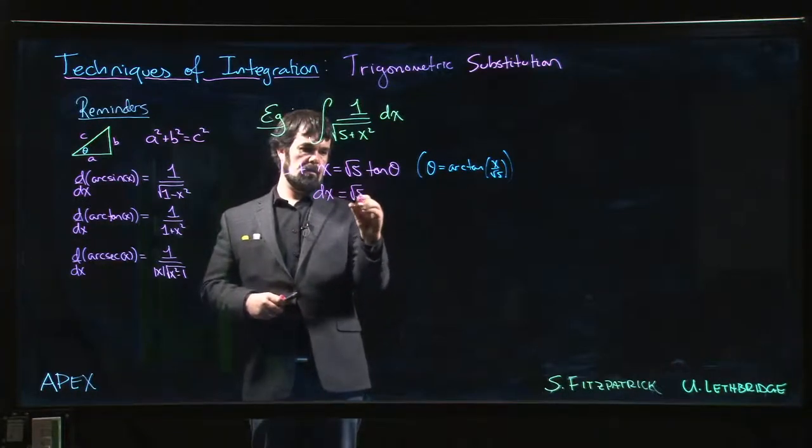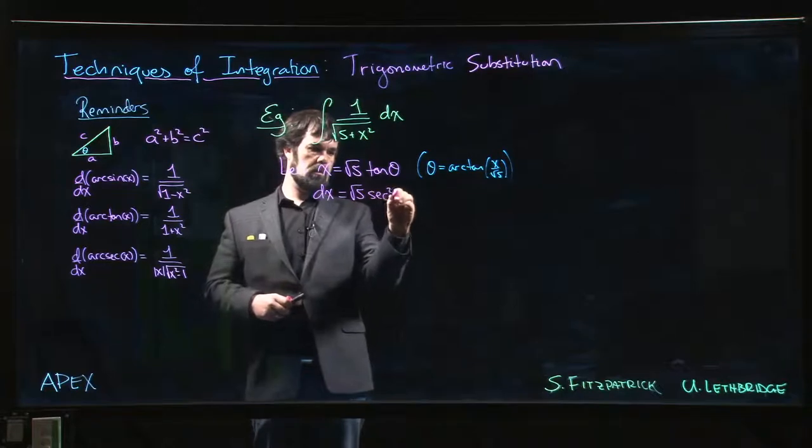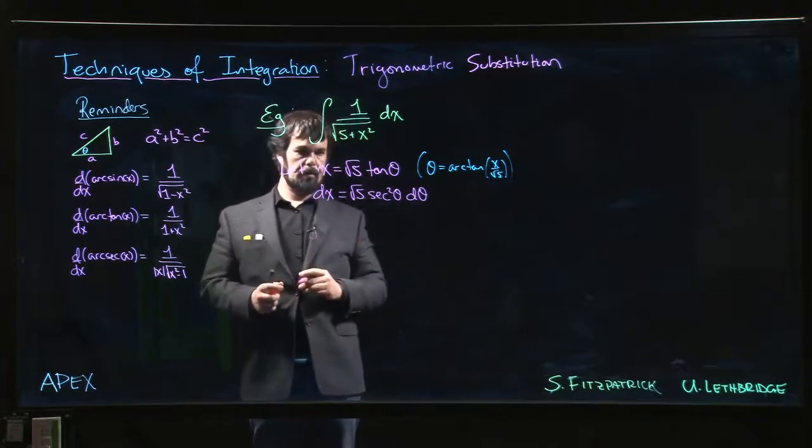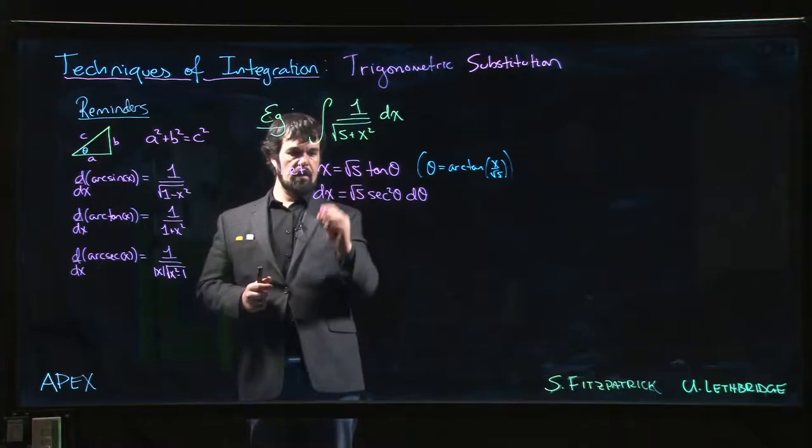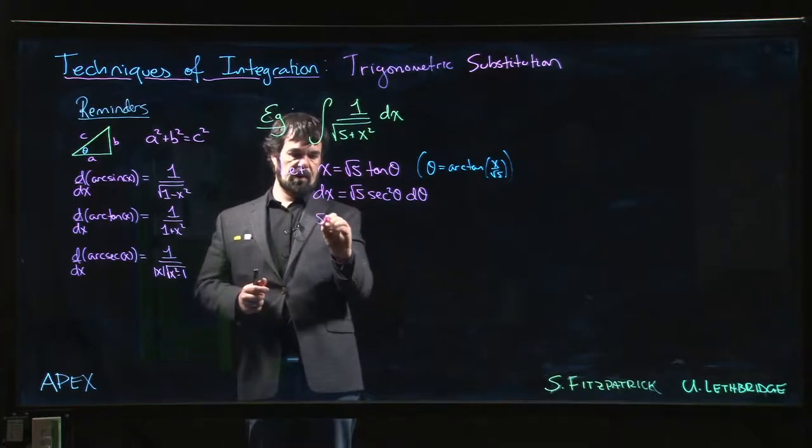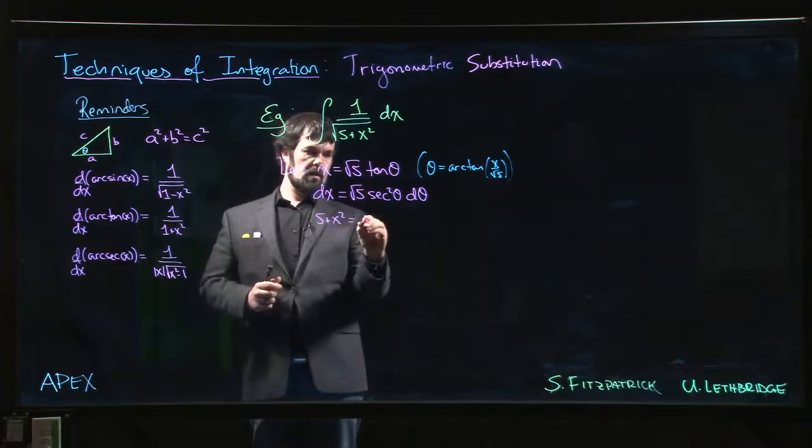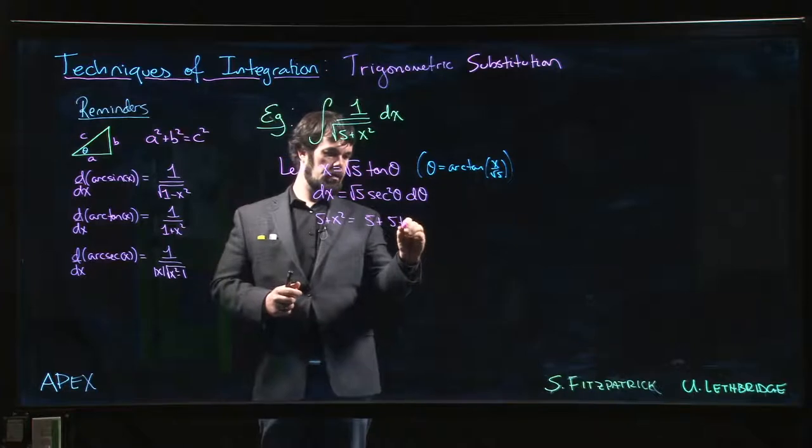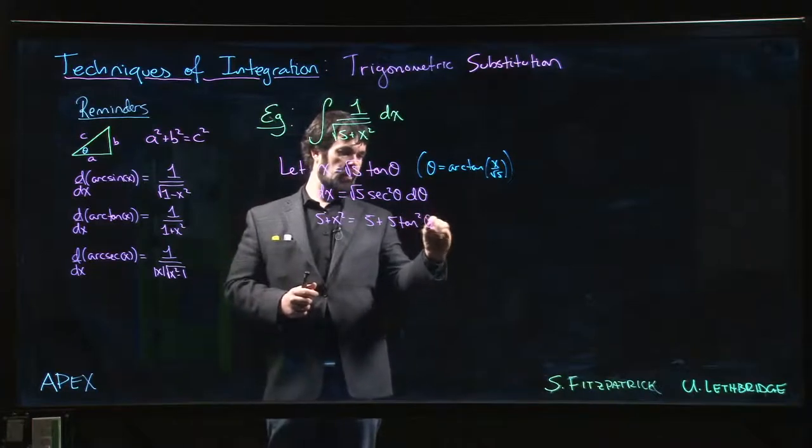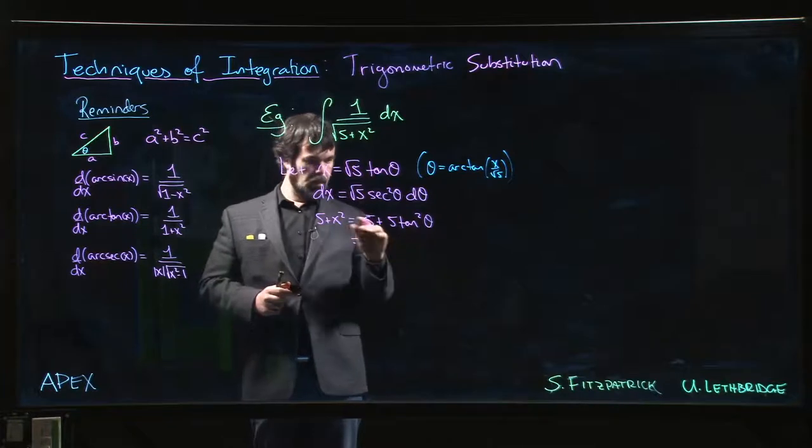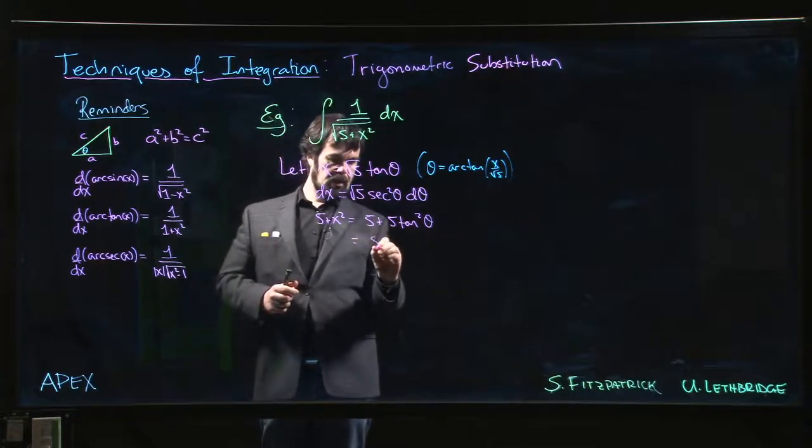dx equals root 5 secant squared theta times d theta. Okay, and what is 5 plus x squared? 5 plus x squared is 5 plus 5 tan squared theta. Factor out the 5, I've got 1 plus tan squared. 1 plus tan squared is...